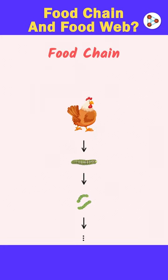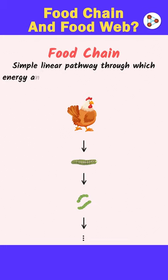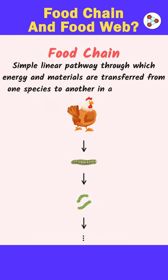A food chain represents a simple linear pathway through which energy and materials are transferred from one species to another in an ecosystem.